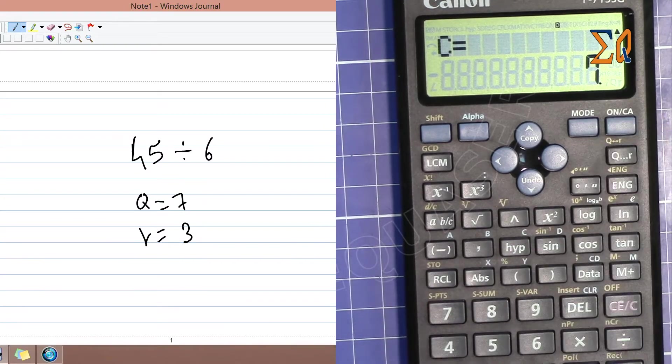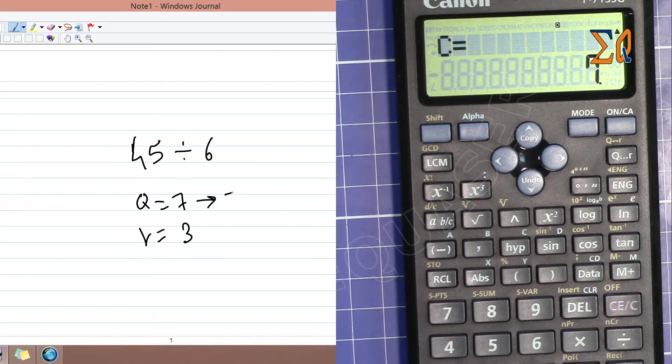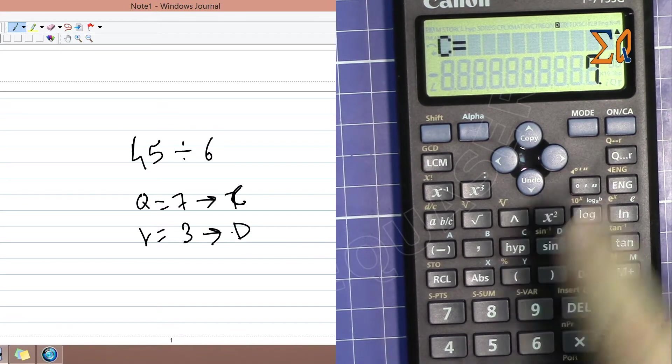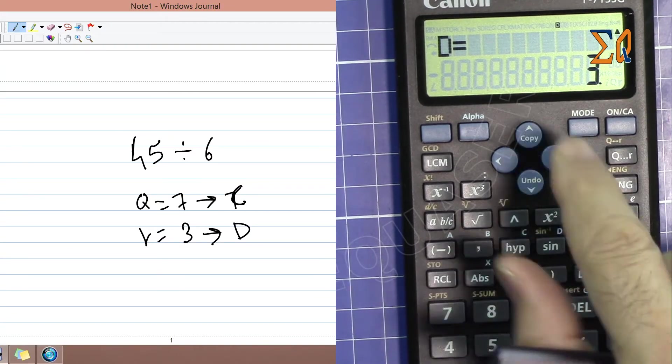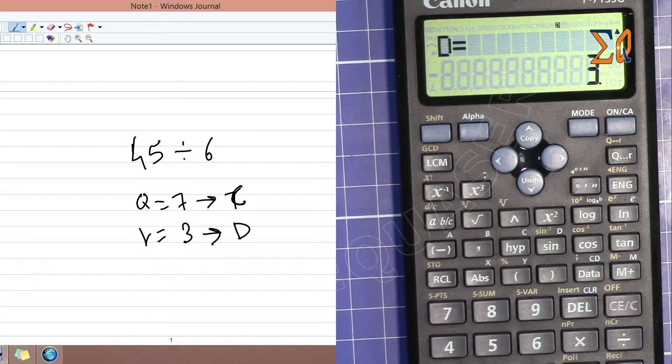The remainder is in D, so to get the remainder, recall D. By default, it goes to that memory. That's it, thank you for watching.